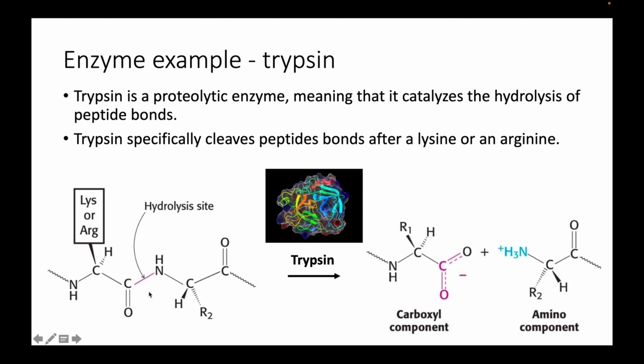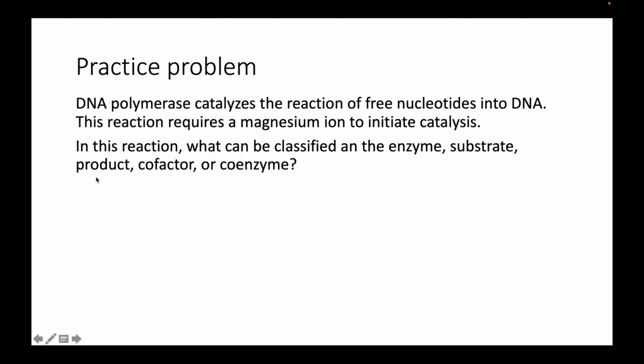Let's apply this vocabulary. DNA polymerase catalyzes the reaction of free nucleotides into DNA, and this reaction requires a magnesium ion to initiate catalysis. In this reaction: what is the enzyme, what is the substrate, what is the product, what is the cofactor, and what is the coenzyme?